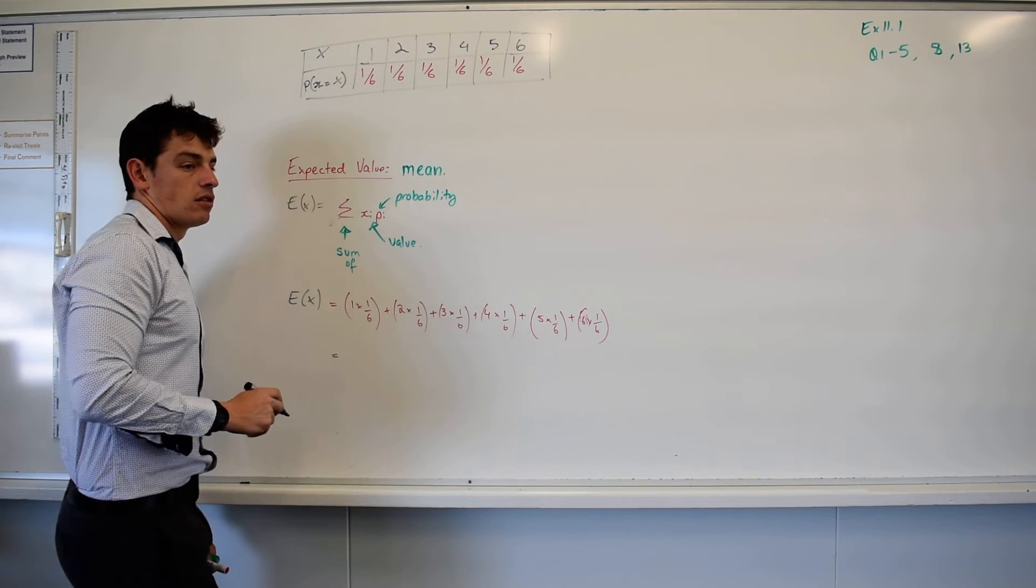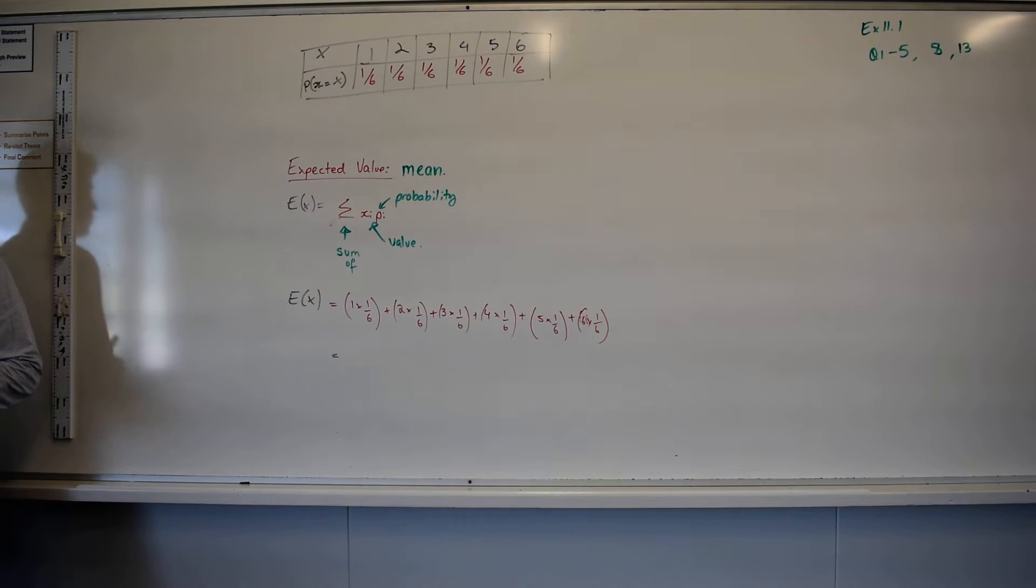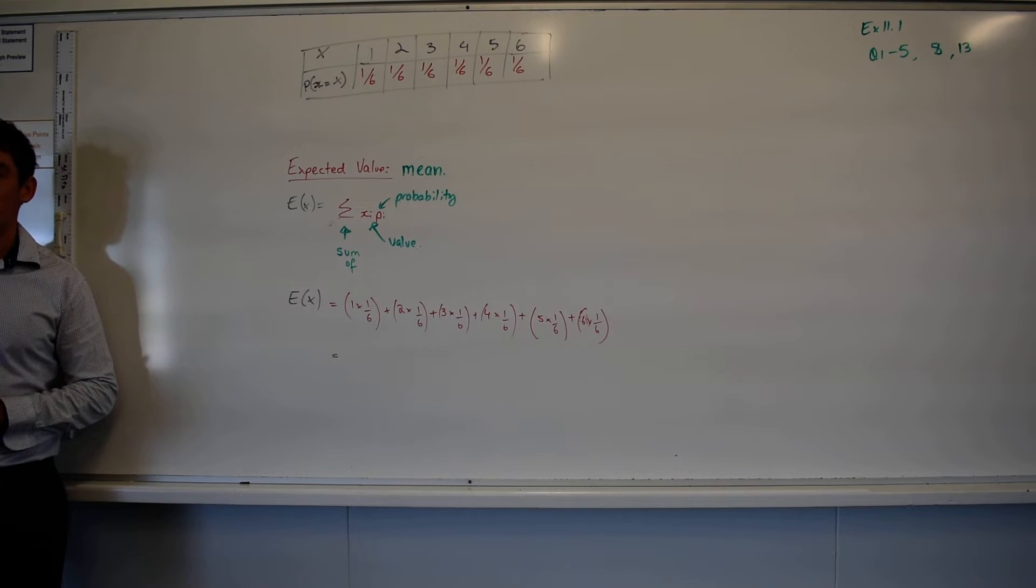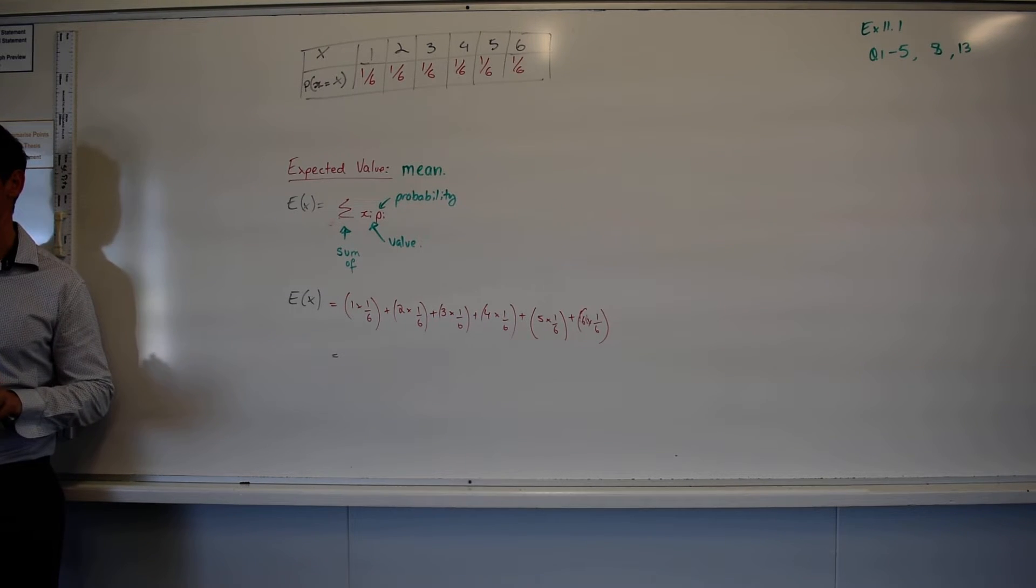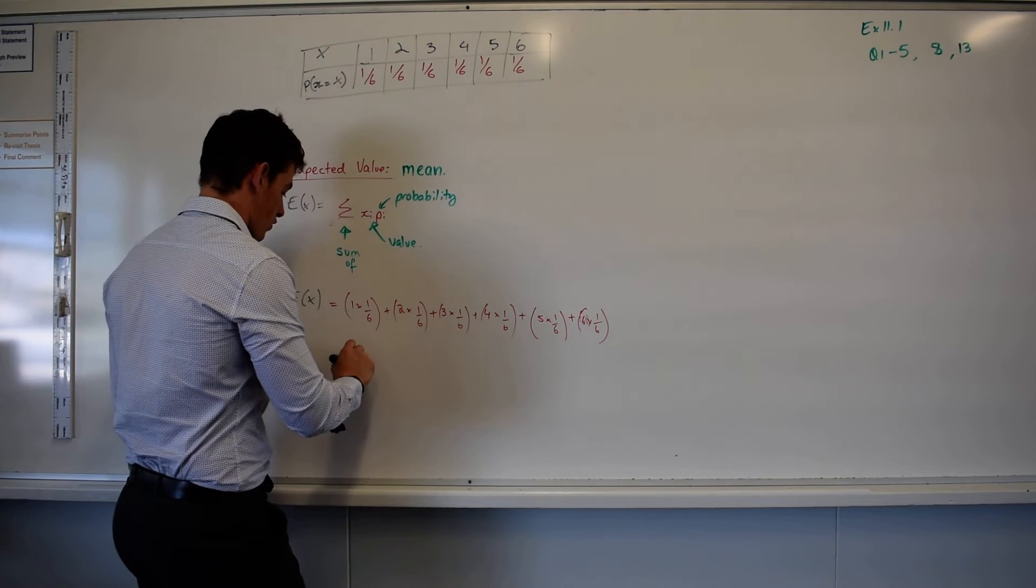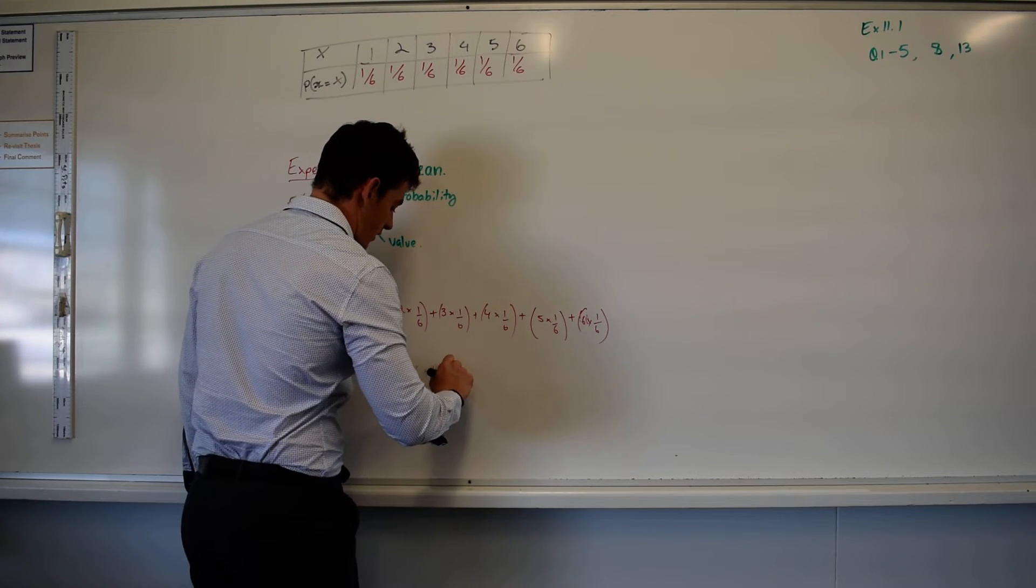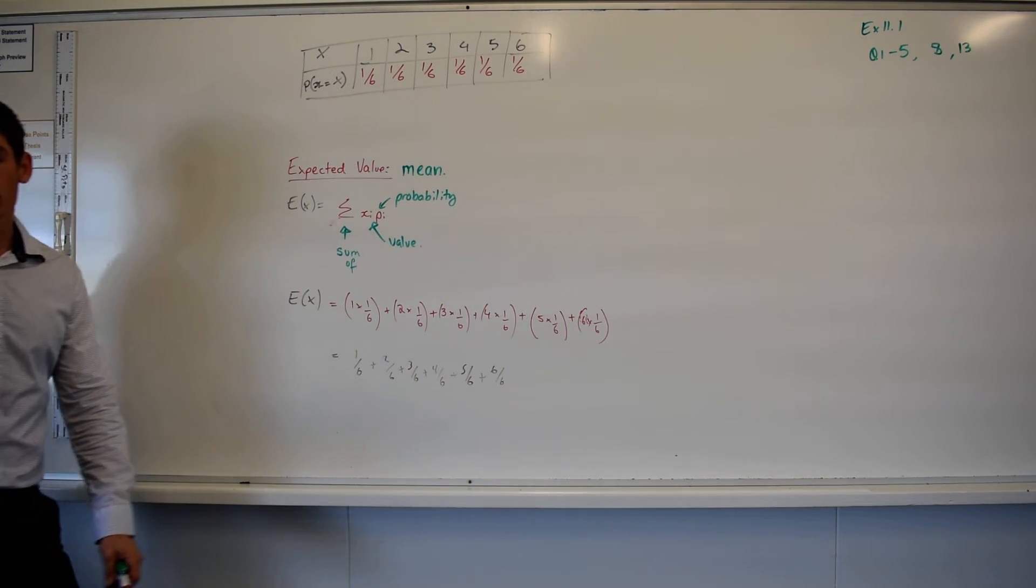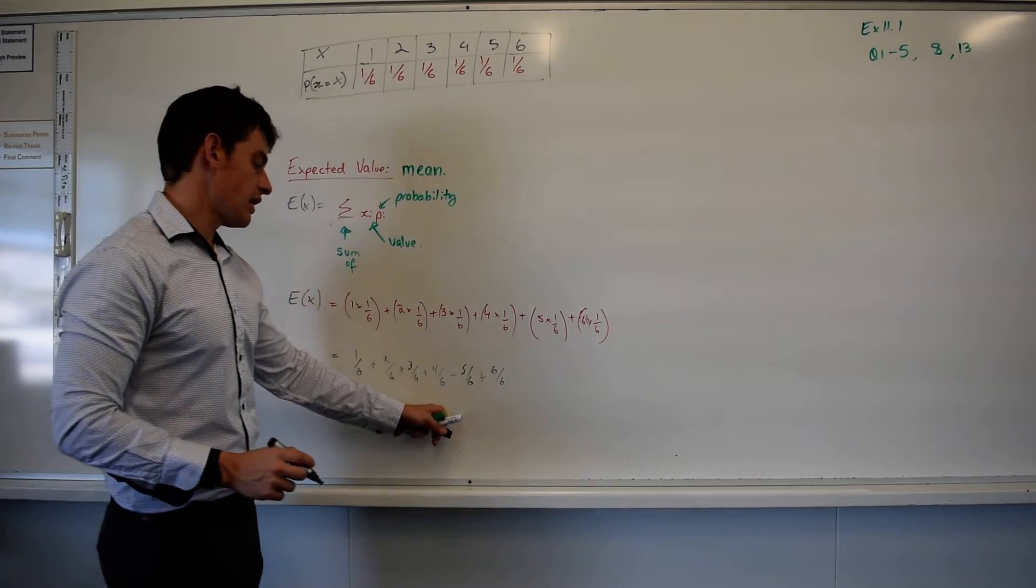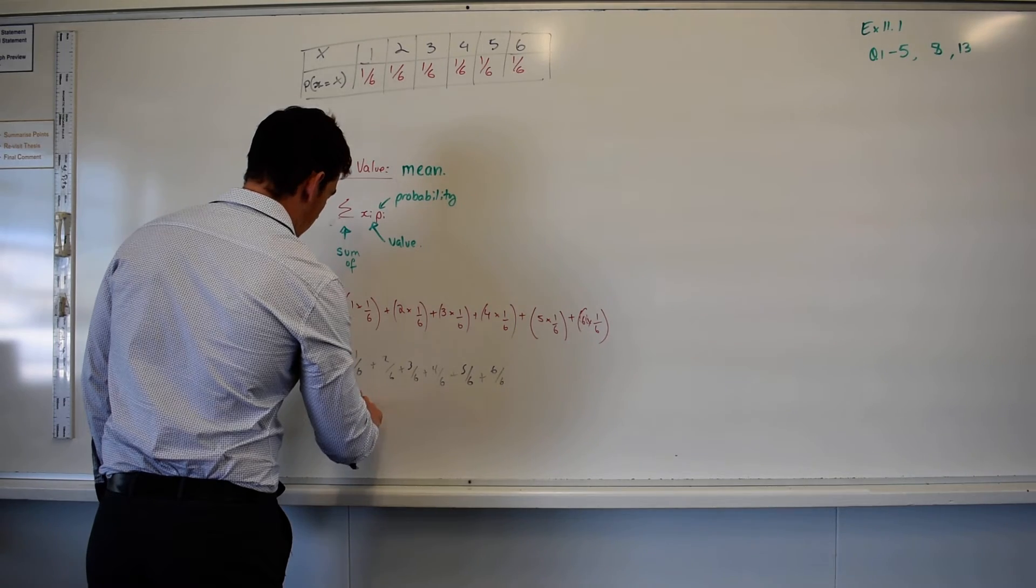So we then have to add these all up, so find out what they equal and add them all up. Chocolate for anyone who could do it in less than five seconds. Oh well, chocolate for me. 21 over 6. Prove me right. So 1 over 6 plus 2 over 6 plus 3 over 6 plus 4 over 6 plus 5 over 6 plus 6 over 6.